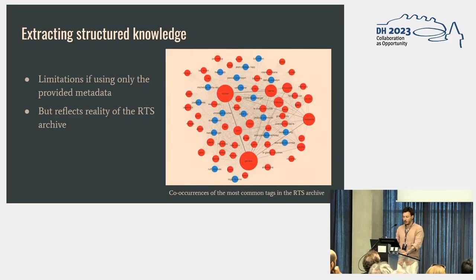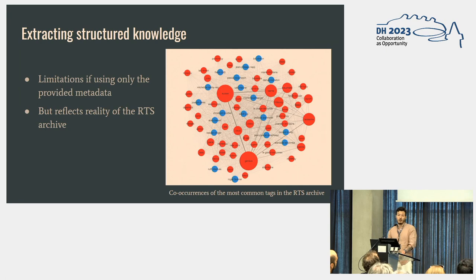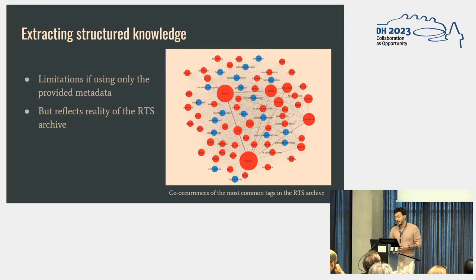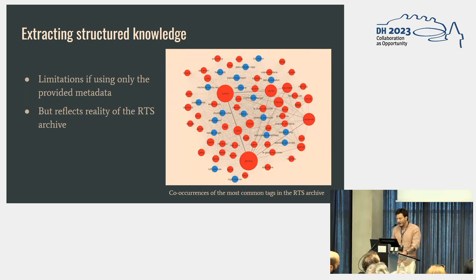The goal was to extract structured knowledge, and there are further limitations if we only use the provided metadata. Tags are, in a sense, only just instances of text. We can look at the co-occurrences of the most common tags in the archive, and unsurprisingly we get Switzerland as well as the main cities as the locations, while for the people, unsurprisingly, there is Roger Federer at the bottom, for instance. But that's pretty much it if we only work with tags. We also tried some clustering using bag-of-words, TF-IDF, or even topic modeling, but we didn't get anything interesting from that.